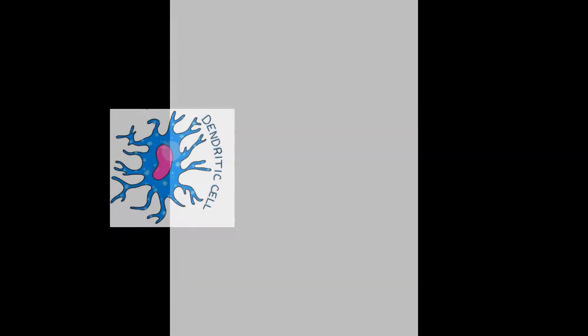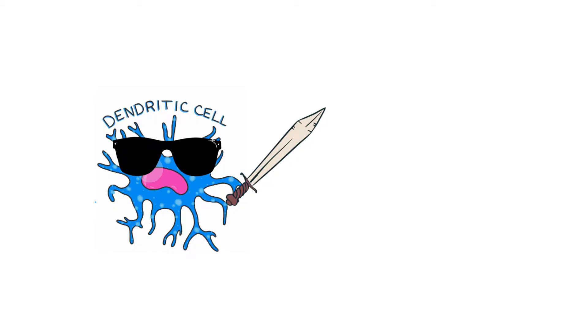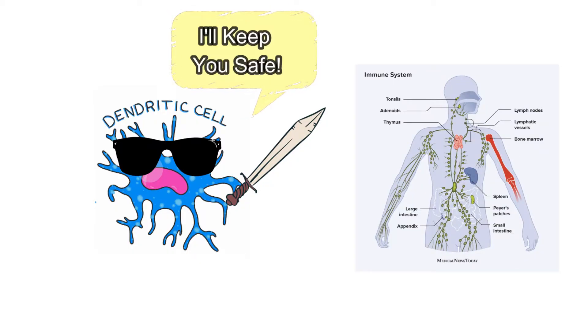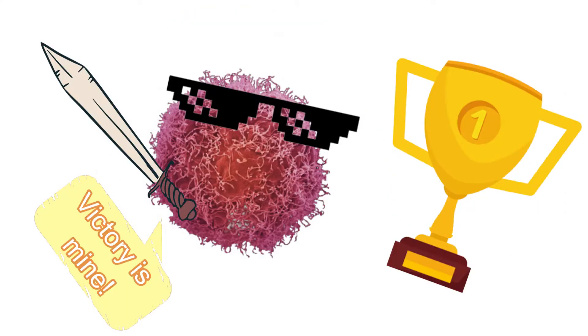This is a dendritic cell. You can think of them as the guard for your skin safety. Dendritic cells boost immune responses. However, when they come in contact with a skin cancer cell or HPV, the cell substantially weakens, which allows the cancer to take over.